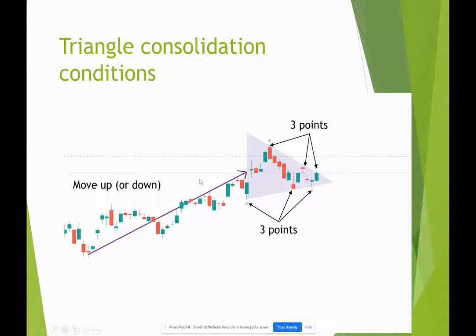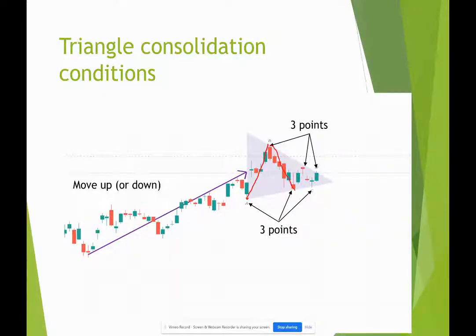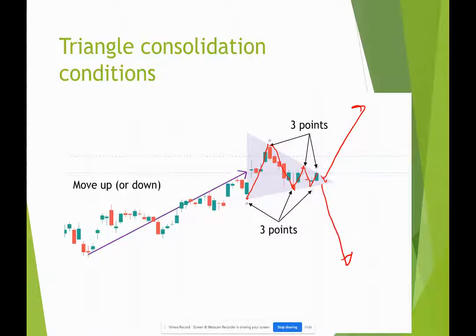So what are the conditions of triangles? First of all, you're going to have a move up or down — a triangle is usually going to have at least three points on each side. You're going to visualize it — it kind of looks like a triangle. You have point one on the bottom side, goes up, comes down. You got a lower high, a higher low, another lower high, another higher low, and then kaboom it goes one way or the other.